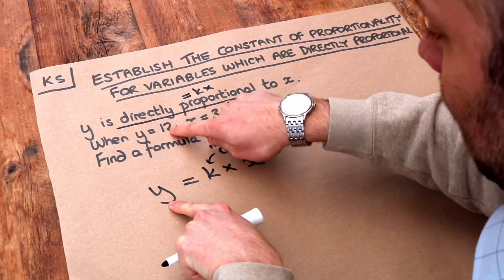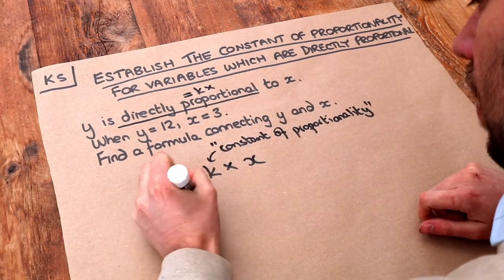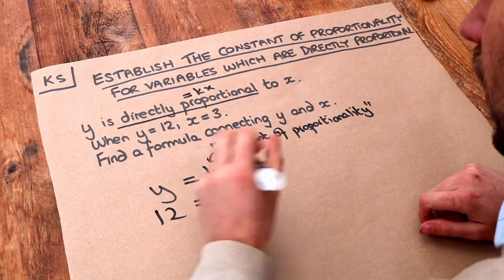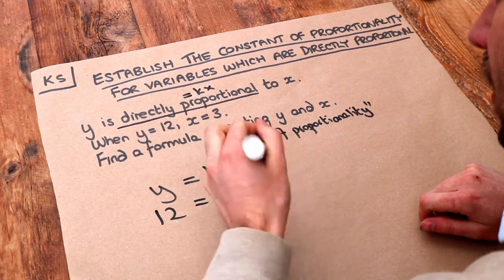Well y in this particular case is 12. We've got equals k times, and then in this particular case x is 3.